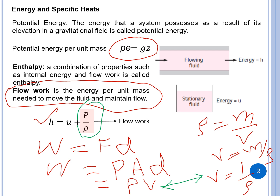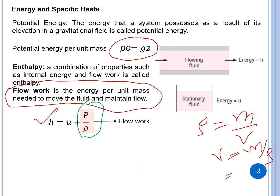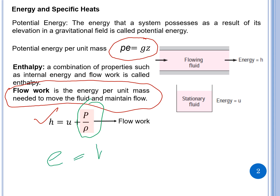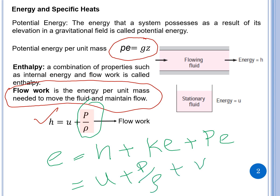So enthalpy includes internal energy and flow work. To reiterate, the total energy of the system is E = h + kinetic energy + potential energy, or equivalently u + p/ρ + v²/2 + gz.